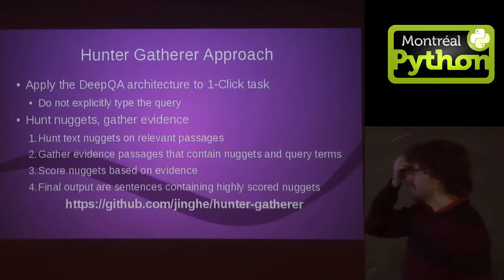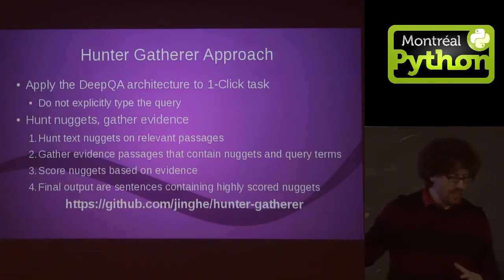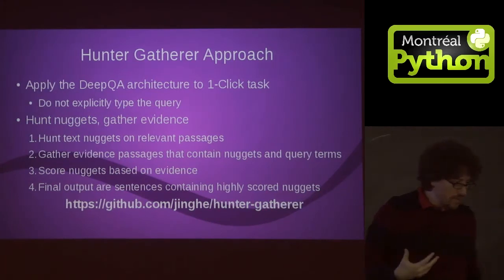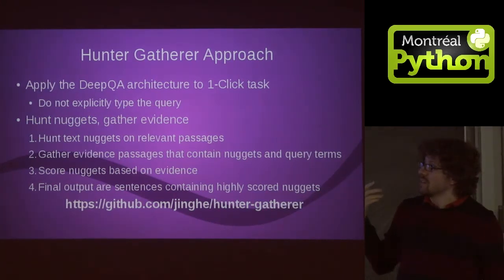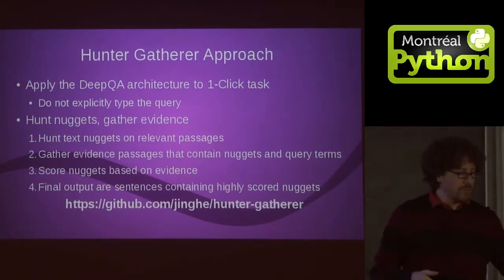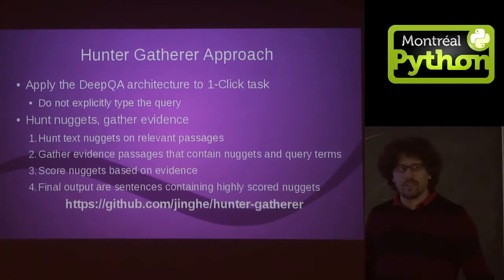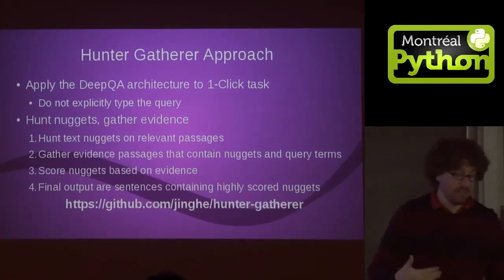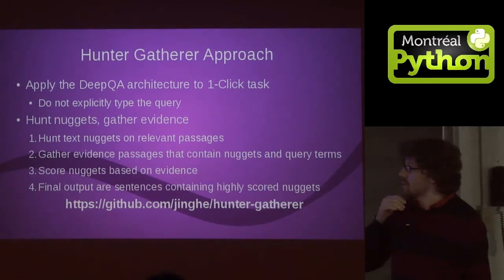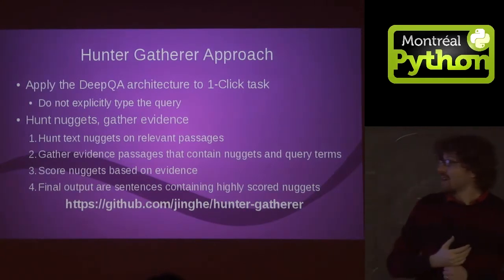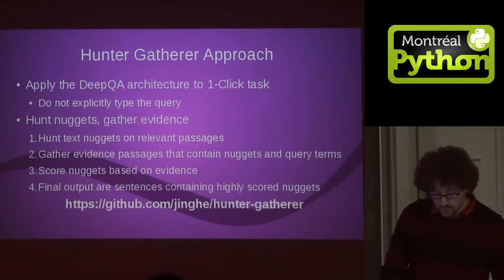Our approach: before moving here, I was at IBM Research and helped build the IBM Watson Jeopardy! system. The intention was to apply the same DeepQA architecture to the one-click task. One of the main things of the DeepQA system was not to use type information explicitly. In normal question answering systems, if you say 'who was the president in 1978?' you start classifying the answer type. One of the big things about Watson is it doesn't do that — that's why it could fail miserably, but could also use more evidence. The approach in Hunter-Gatherer is a simplification of the DeepQA architecture, where you hunt for text nuggets, gather evidence for those nuggets, score them using the evidence, and try to assemble a final output using the highly scored nuggets.